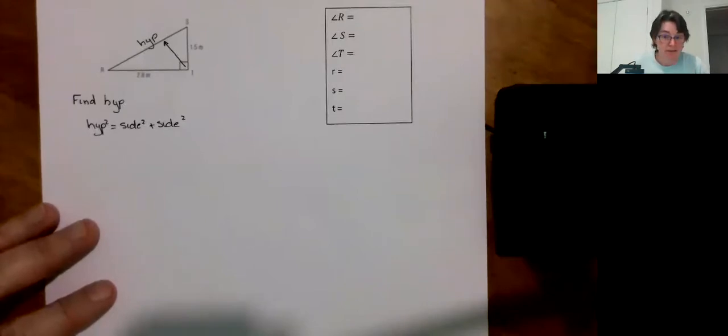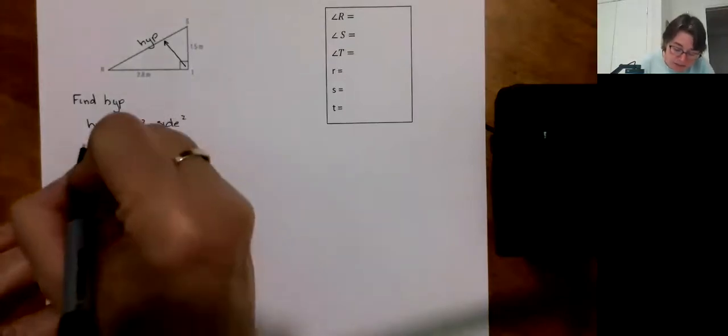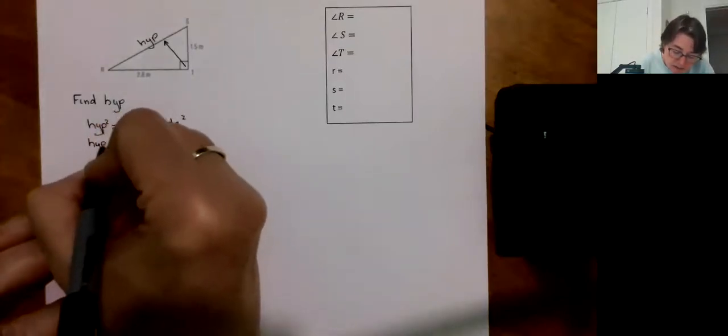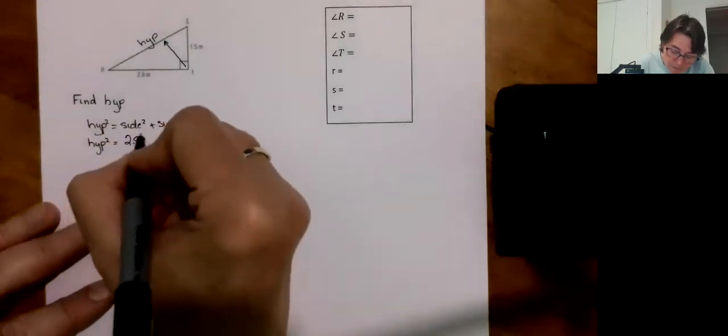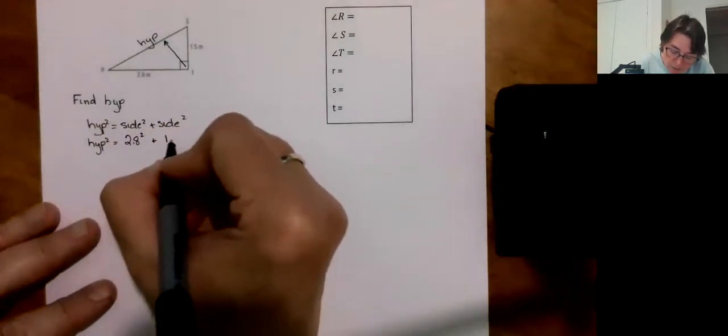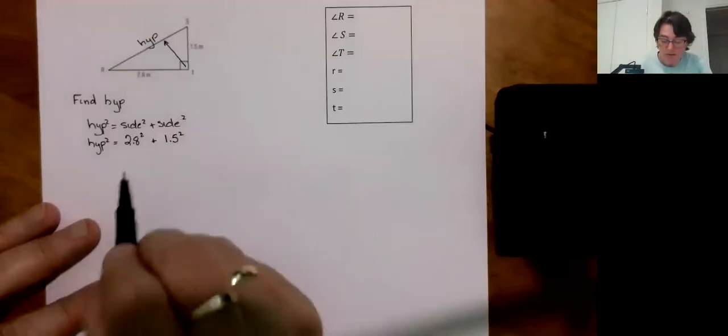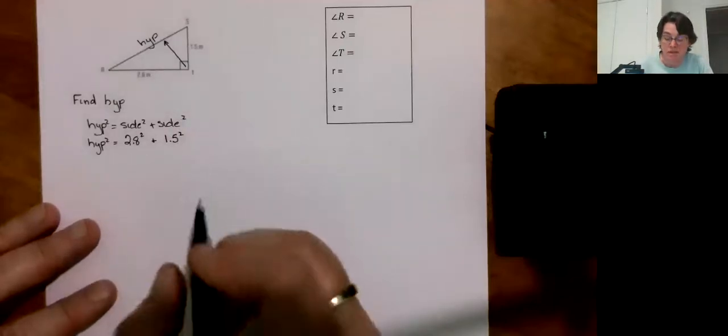Unlike this one, it's a set of like five or six videos. Pretty straightforward. All right, so we don't know our hypotenuse. We got 2.8 squared plus 1.5. Remember, you can put the 1.5 and then the 2.8, it doesn't matter.